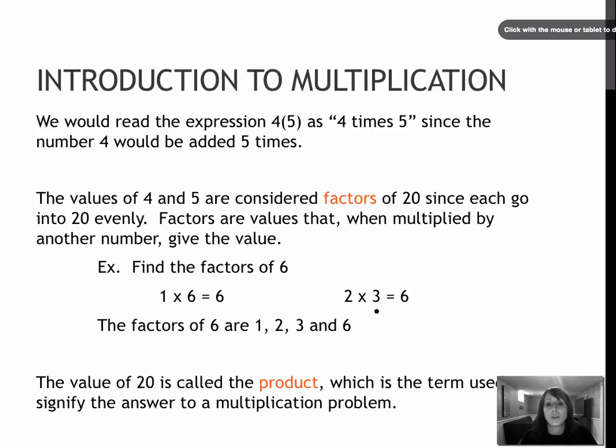A couple of different vocabulary words for us: factors and product. So the factors are the things that are being multiplied, the terms being multiplied to find the value, in this case, of 20. 20 is called the product, because that is the solution when we multiply the two things together.